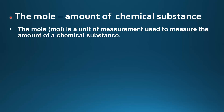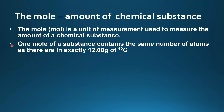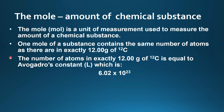In this video we'll look at the mole. The mole, which is sometimes abbreviated to mol, is a unit of measurement used to measure the amount of a chemical substance. One mole of a substance contains the same number of atoms as there are in exactly 12 grams of carbon-12. The number of atoms in exactly 12 grams of carbon-12 is equal to Avogadro's constant, which is 6.02 times 10 to the power of 23.